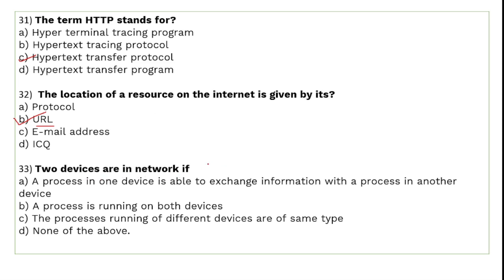Two devices are considered to be in a network when a process in one device is able to exchange information with a process in another device. When devices can exchange information with each other, we say that the devices are connected in a network.